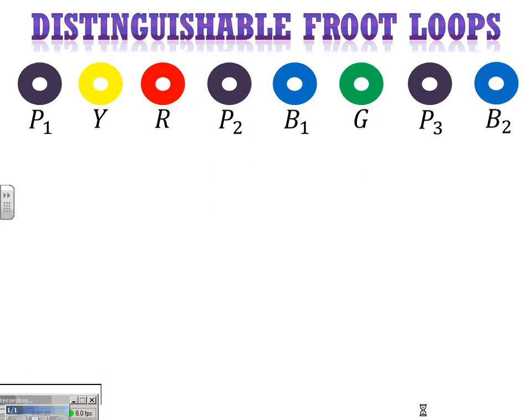Okay, here we're going to talk about distinguishable permutations, or in this case distinguishable fruit loops.